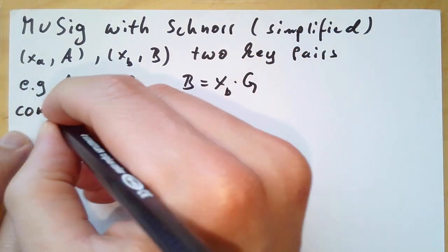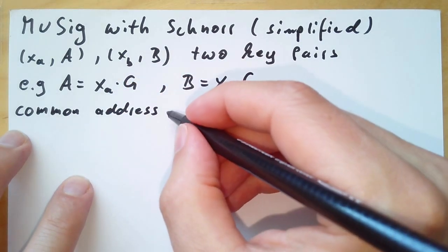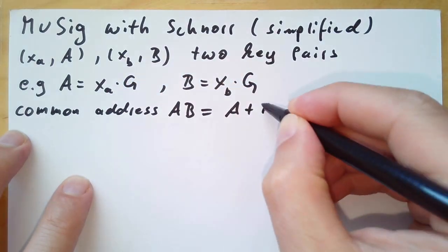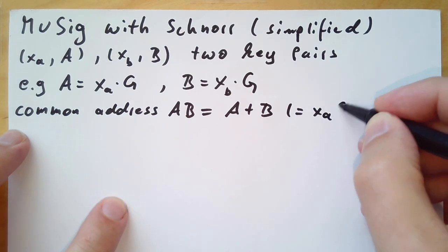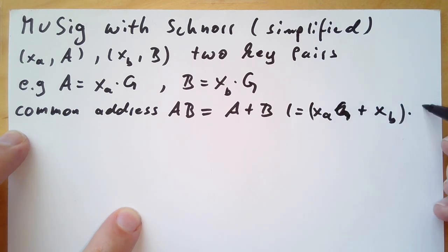Now one thing that we can do is create a common address from these two bitcoin addresses by just adding these public keys, which is the same as adding the private keys and multiplying both with the generator point.